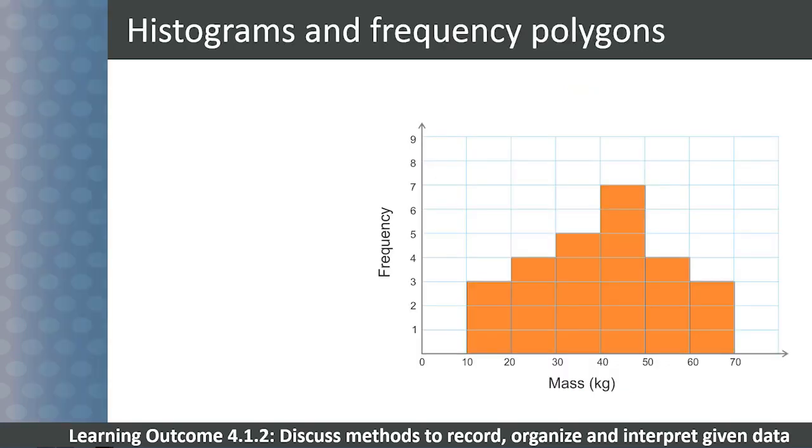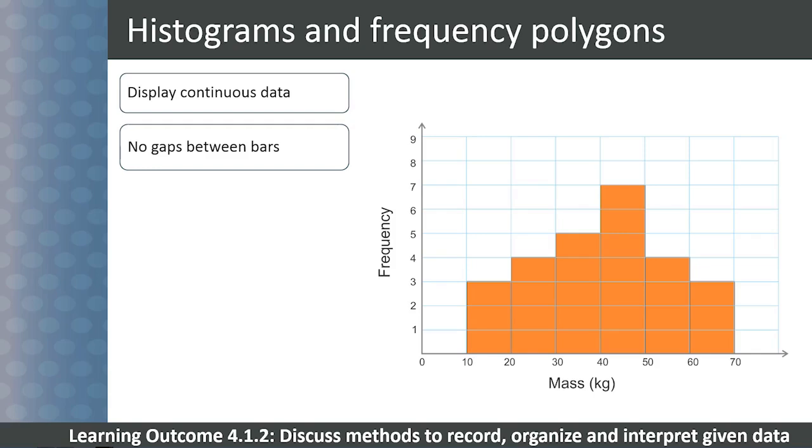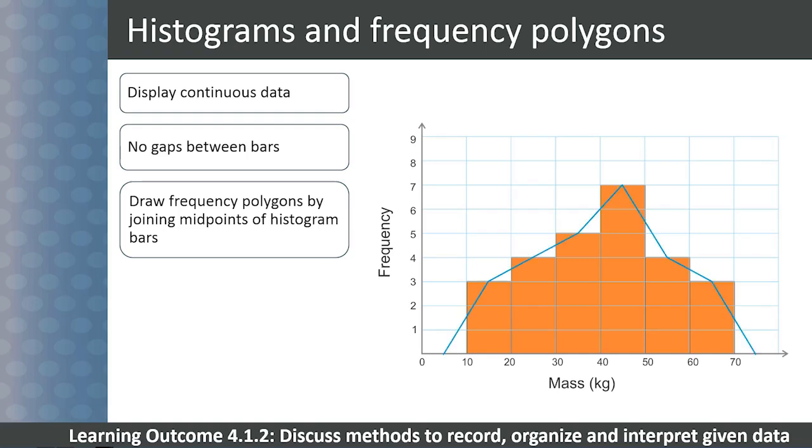Histograms and frequency polygons are used for displaying continuous grouped data according to frequency. Histograms are always drawn without a gap between the bars because of the continuous nature of the data. We can draw frequency polygons by joining the midpoints of histogram bars with line segments and extending the two endpoints to touch the horizontal axis.